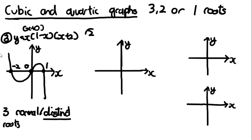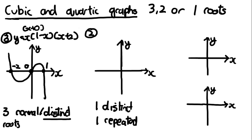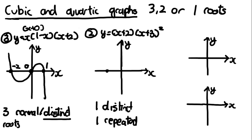A cubic can also have two roots: one distinct root and one repeated root. A repeated root exists when one of the brackets is to a power. For example, y = (x + 2)(x + 3)². The squared means minus 3 is a repeated root. So the roots are minus 3 and minus 2.